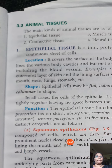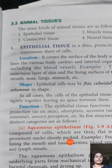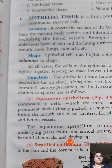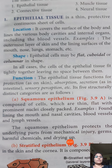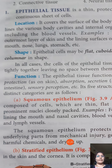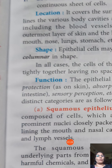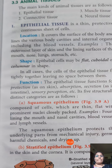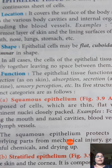Epithelial tissue covers the surface of the body and lines various body cavities — inside the stomach or inside the heart. The outermost layer of the skin and lining surfaces of the mouth, nose, lungs, and stomach are also covered by epithelial tissue. Three kinds of shapes are seen in epithelial tissue: flat, cuboidal, or columnar shape — columnar meaning column or pillar shape.